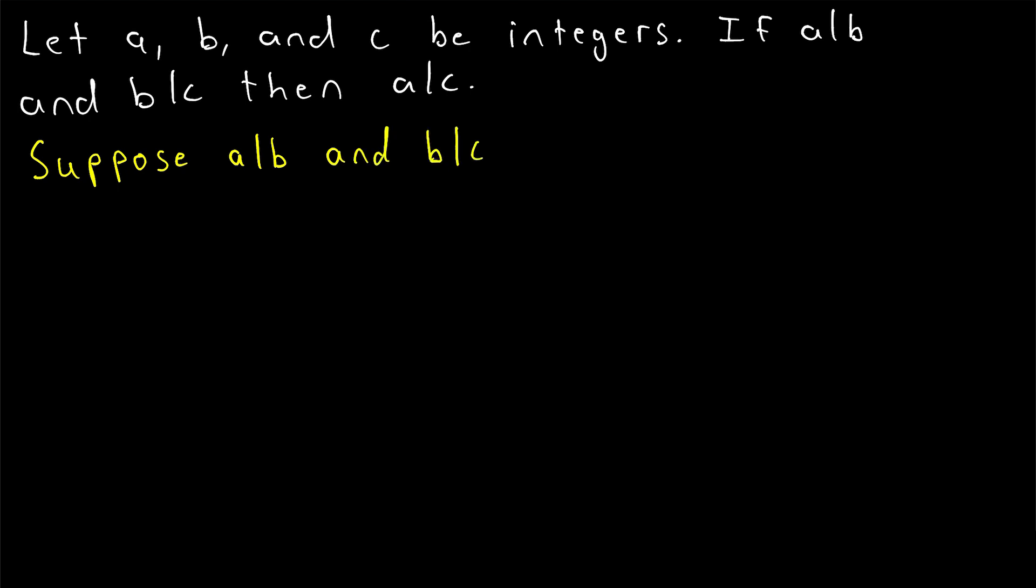Of course, we're also assuming that A, B, and C are integers. A good place to really start our proof is to take note of what these definitions mean. What do we actually know about A and B and C? Since A divides B, that means by definition there's some integer we'll call K that we can multiply A by in order to get B.